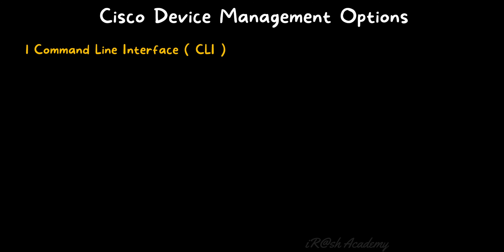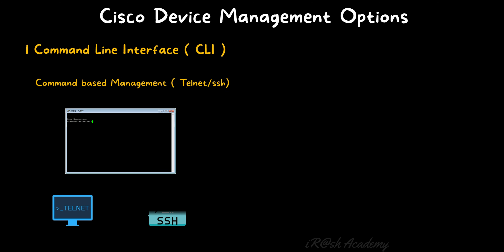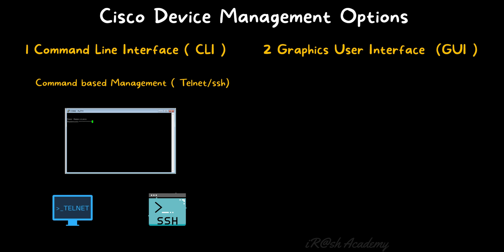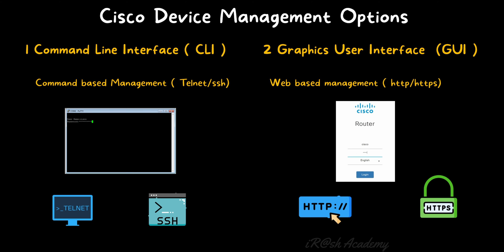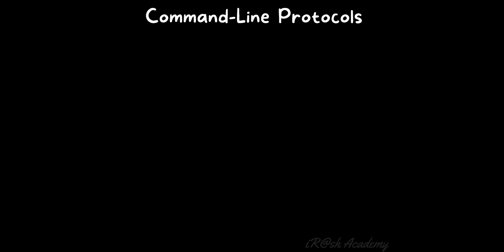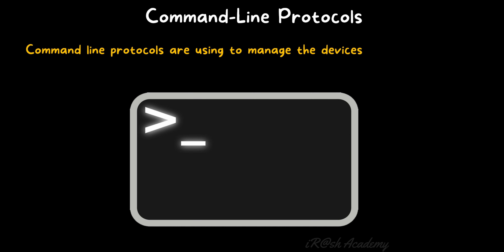There are two options available to manage a Cisco device. Option one is the Command Line Interface (CLI), which uses command-based management protocols such as Telnet or SSH. Option two is the Graphical User Interface (GUI), which uses web-based management protocols such as HTTP or HTTPS. The CLI is preferred because it is more advanced — GUI has limitations and only shows basic options, whereas if you want to tune the device or configure at a more advanced level, you need the command line interface.